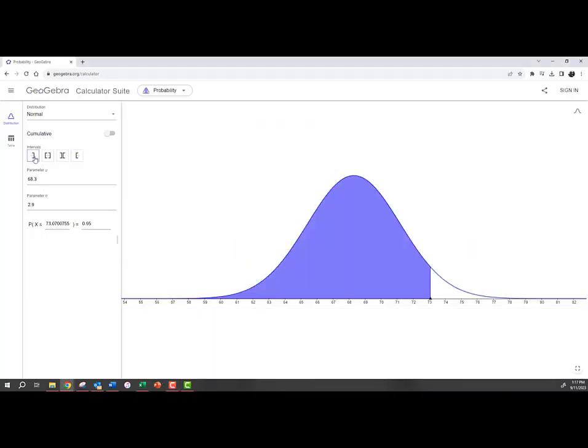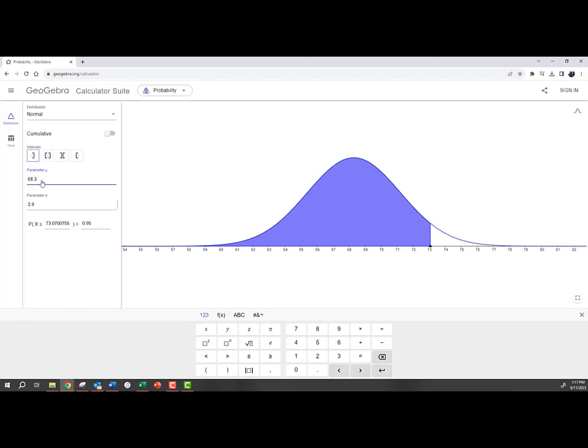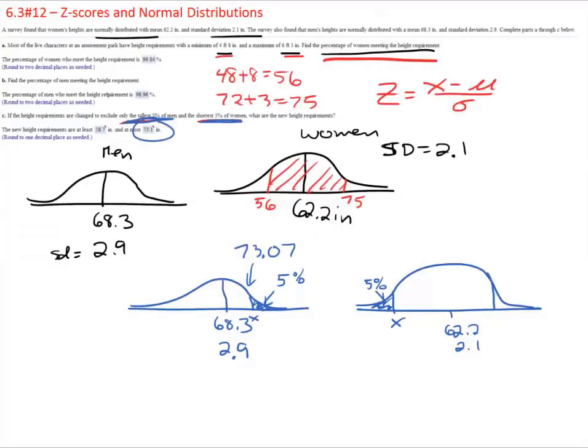And then now we want the lower but we need to change this back to the women's stats, 62.2 and 2.1, and again we need to solve for this one so we need to delete all this, get rid of that, and instead tell it that we want the cutoff to give us 5%. We double check that, yep that's the lower end, so there is the lower number 58.745 which would round to 58.7 if we only wanted one decimal place, and that's how we get everything from technology.